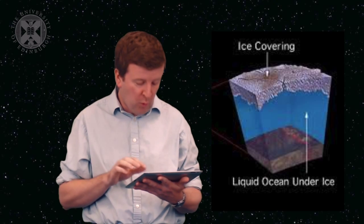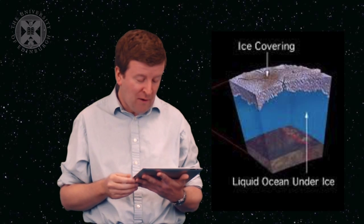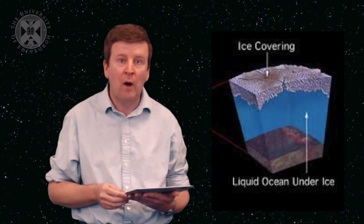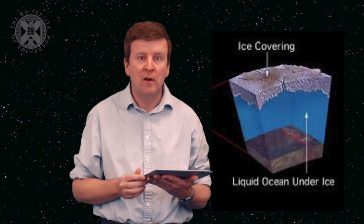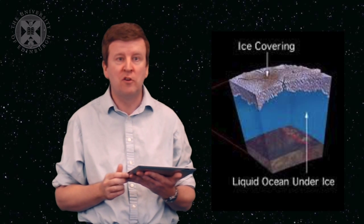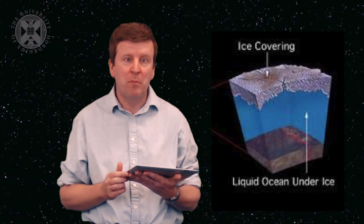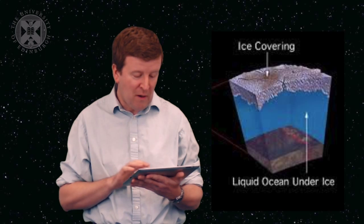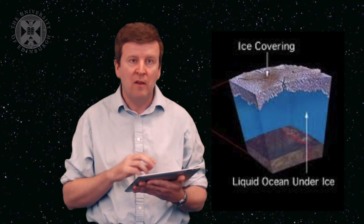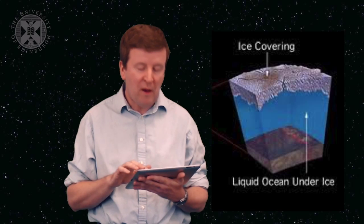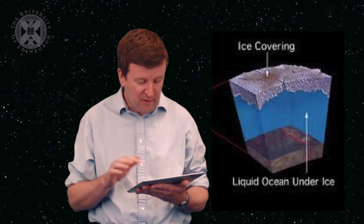That might be by a liquid water ocean. There's other evidence for a water ocean as well. The saltiness in the ocean perturbs the magnetic field of Jupiter. This evidence has been picked up by studying Jupiter's magnetic field around Europa, suggesting that Europa has a salty ocean inside it.